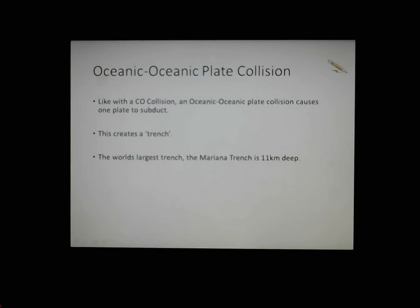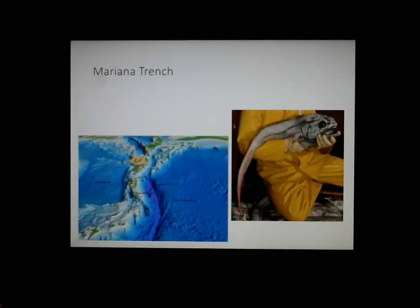Our last convergent type is OO collisions — oceanic to oceanic — and it causes one to subduct, but it creates what's called a trench, because both plates get pulled down a little bit. The other doesn't really get pushed over the top or rise above the ground. The Mariana Trench is a wonderful example of an oceanic-oceanic collision, located off the coast of the Philippines.